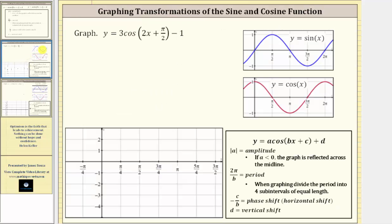Let's look at an example. Let's graph y equals three times cosine of the quantity two x plus pi over two minus one. So notice a is equal to three, b is equal to two, c is equal to pi over two, and d is equal to negative one.